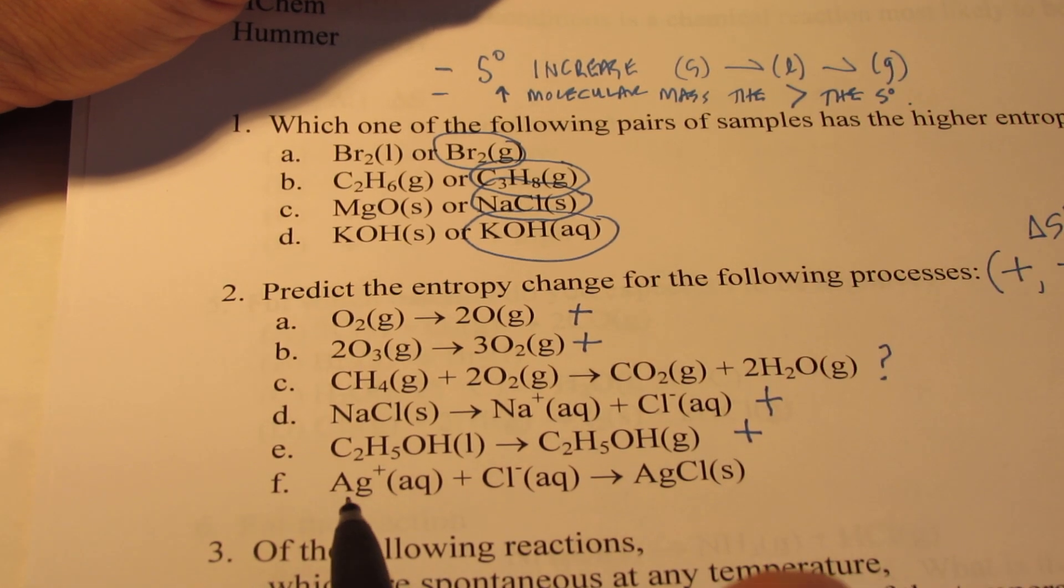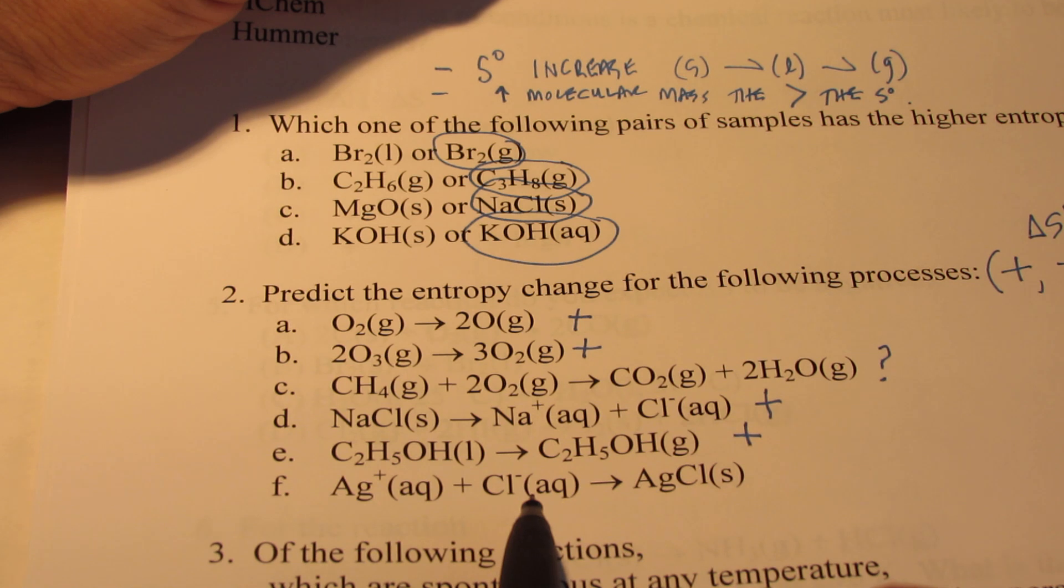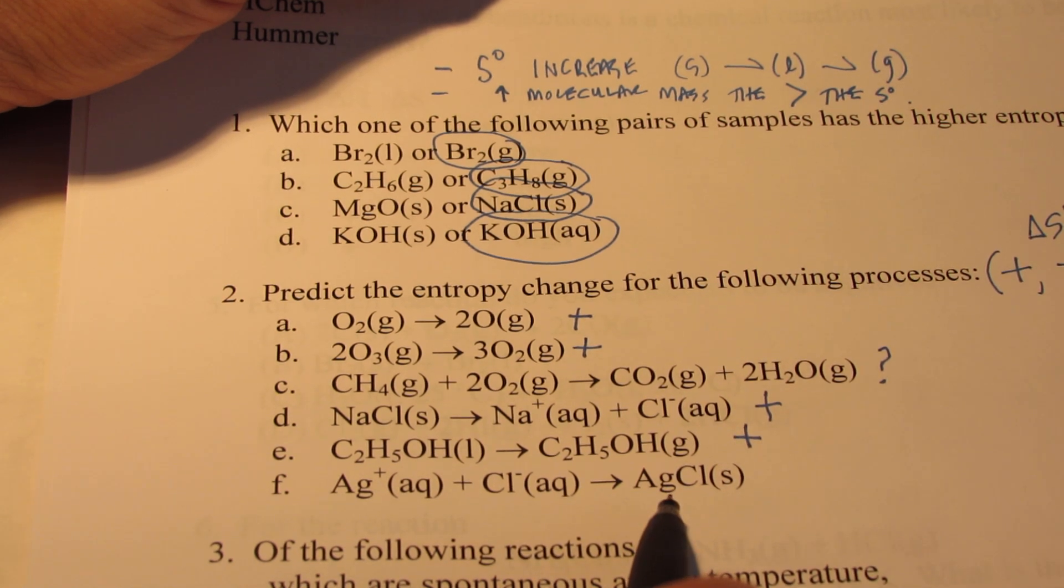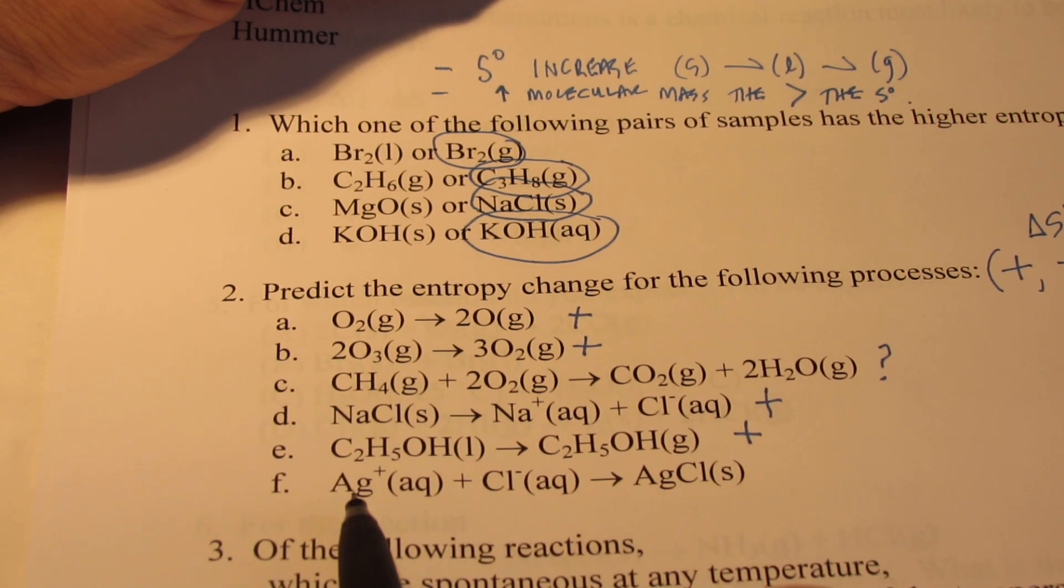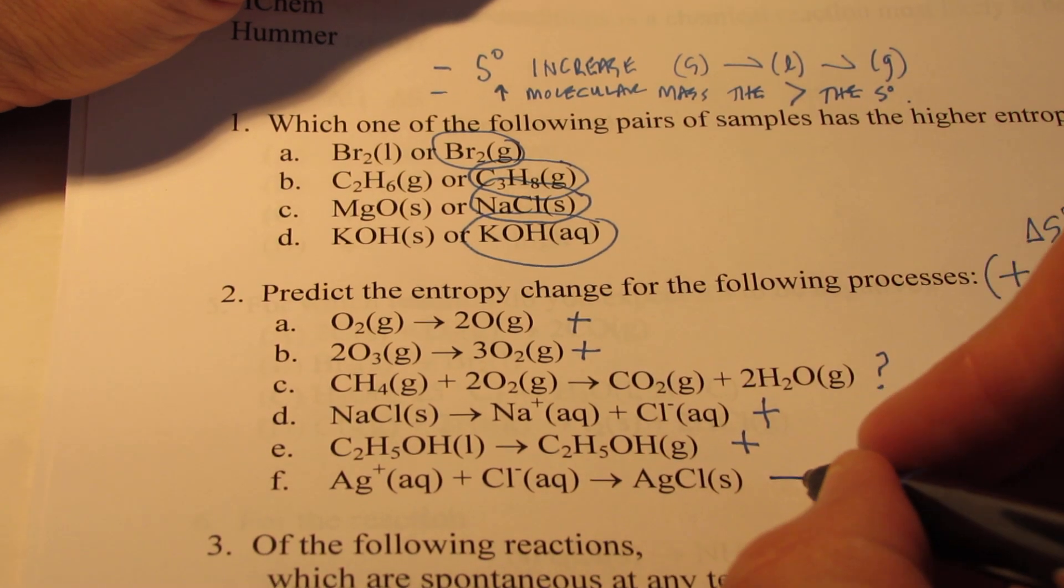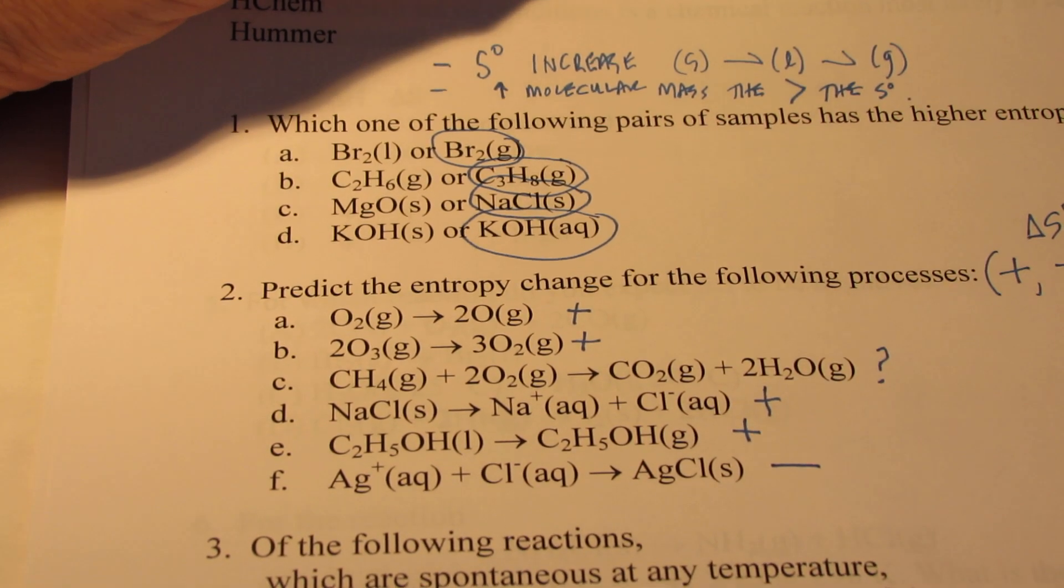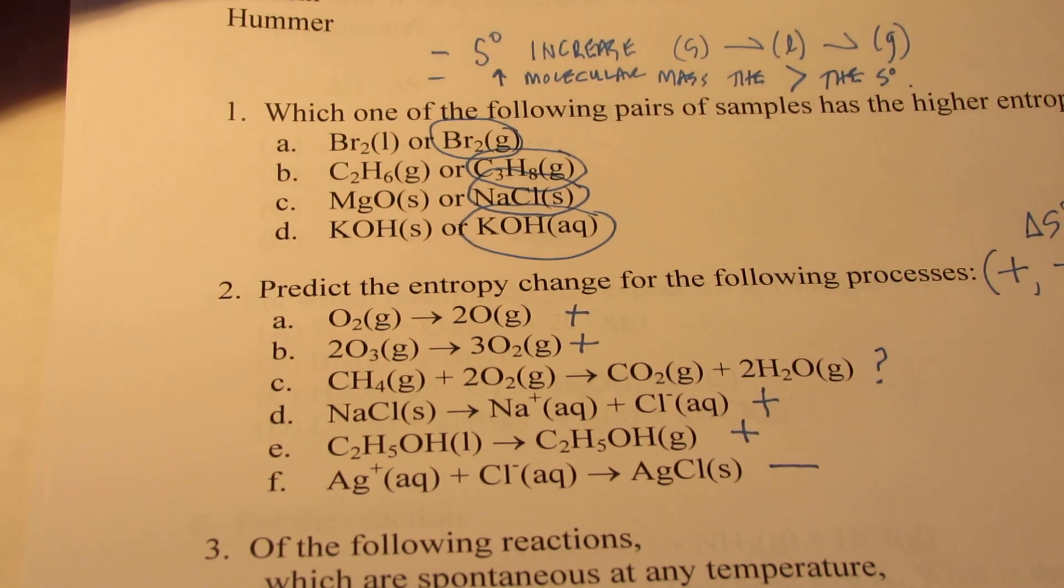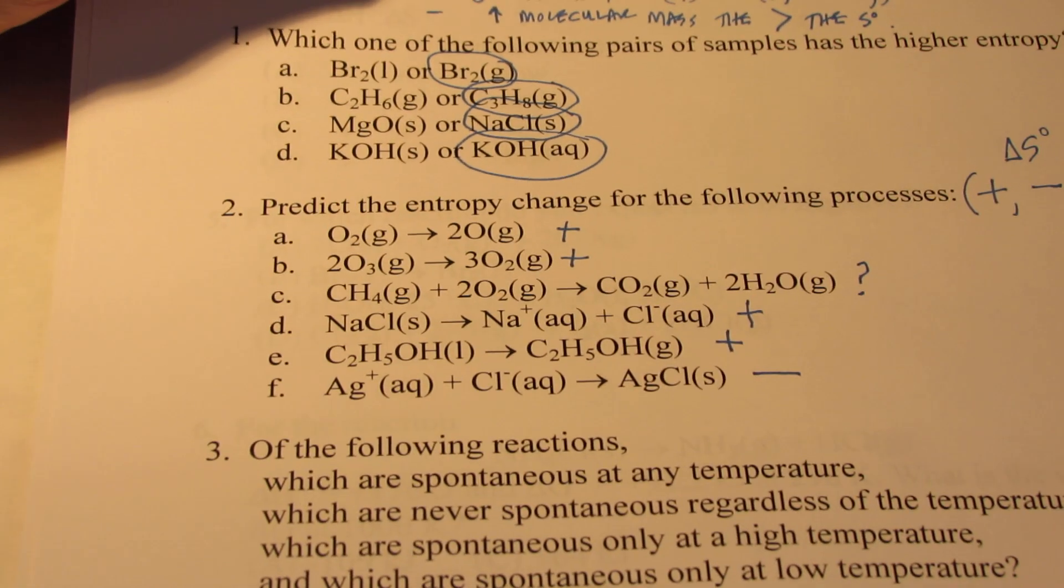And finally, letter F, we have these things dissolved in water and they come together to form a precipitate, a solid. So we have a lot of disorder here and a lot of order here. So entropy is decreasing on letter F. Okay? All righty.